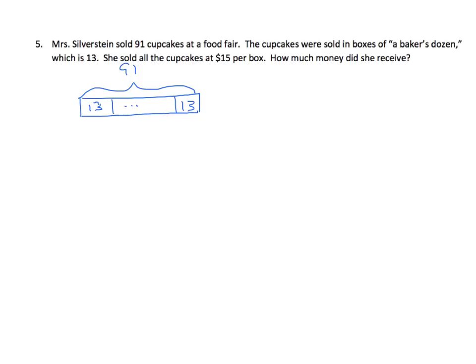So we can divide, and we'll find out how many groups of 13 we have. So we have 91 divided by 13. Now I could round 13 to 10, and I could round 91 to 90, and that's going to give me 9. But I can tell you right now, that's not going to work, because I know that when I multiply 13 times 9, I'm going to get something a lot bigger than 91.